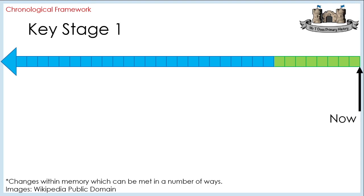All of my timelines for Key Stage 1 start with now — I call it an anchor point. It also ties to the Early Learning Goal of now and past. Let's say the first history topic was all about changes within living memory: toys, homes, shopping, and other ways to cover that. That's a duration of time, and you'll notice that on my timeline it covers across the scale.